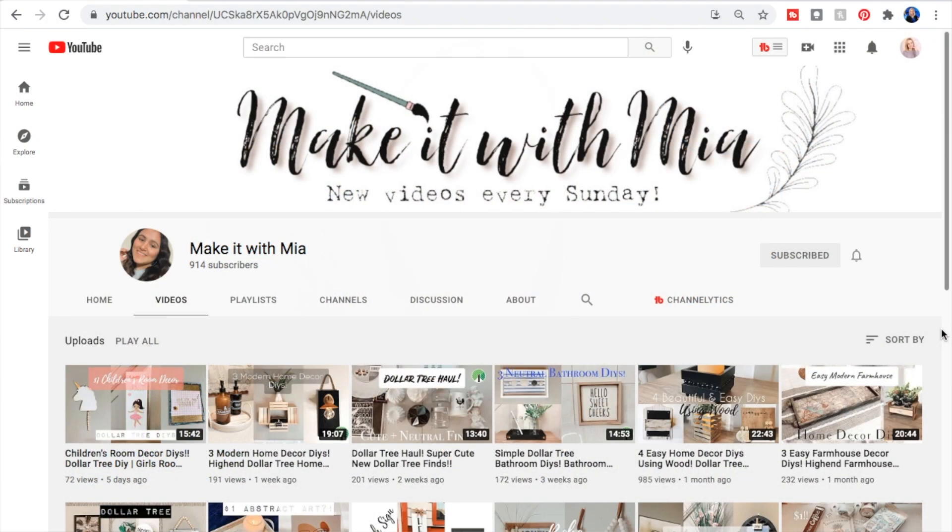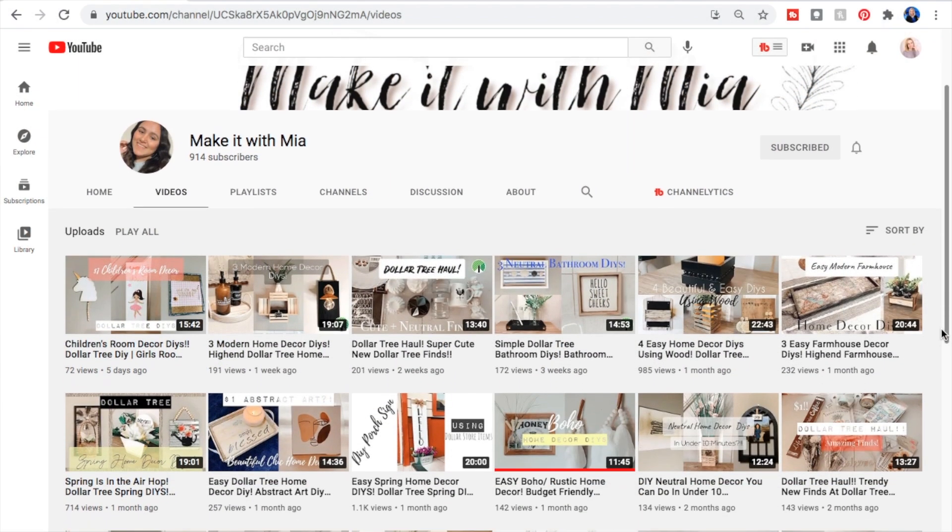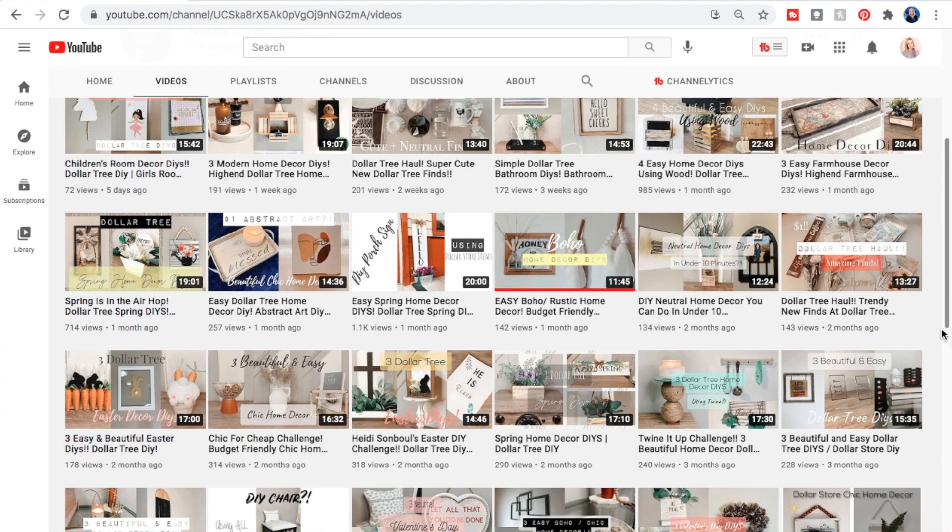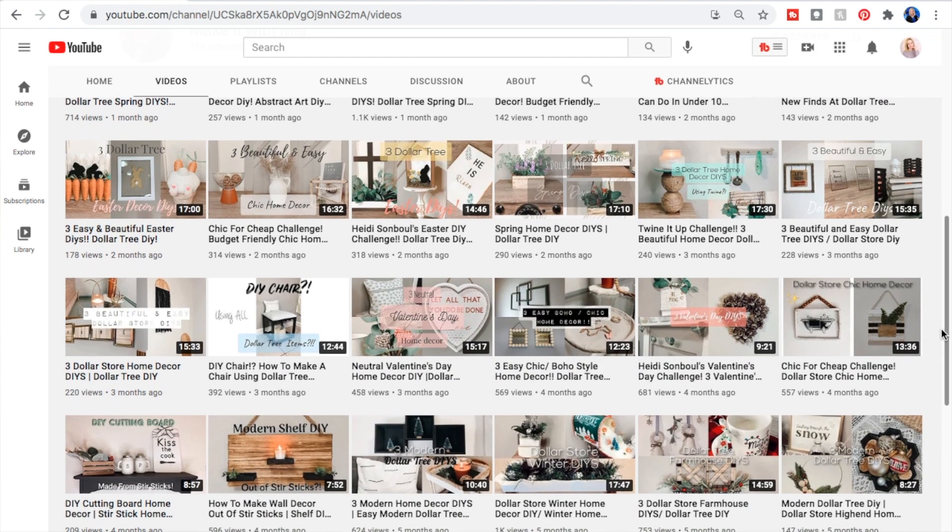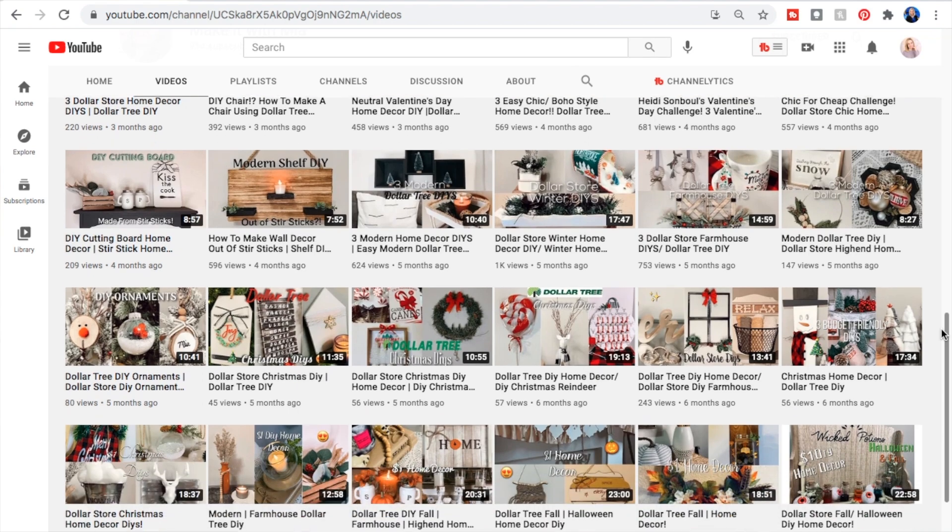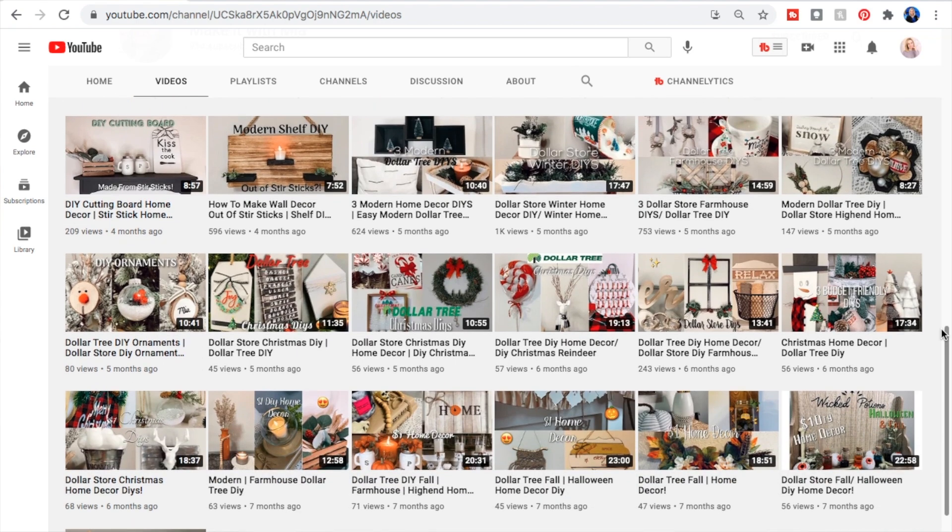As I mentioned in the beginning this video is part of a collab with Mia over at Make It With Mia. We are doing the same thing. She on her channel did some more high-end store inspired DIYs using Dollar Tree items and if you like my channel and the type of DIYs that I do here then you will definitely love her channel. She does a little bit of a mix of a modern farmhouse kind of boho type style that is just so on point. So definitely head to the description box check out the link to her channel and go give her some love on her video. With all of that being said let's move on to the next project.